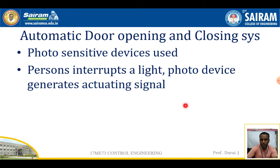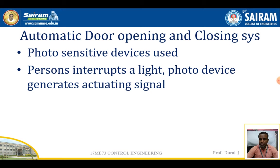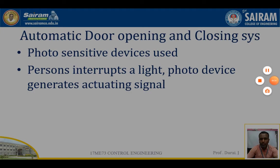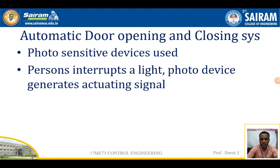Even if the person moves parallel to the door, the door will still open. The person's presence interrupts the light beam and the photo sensor actuates the signals. That is the automatic door opening and closing system.